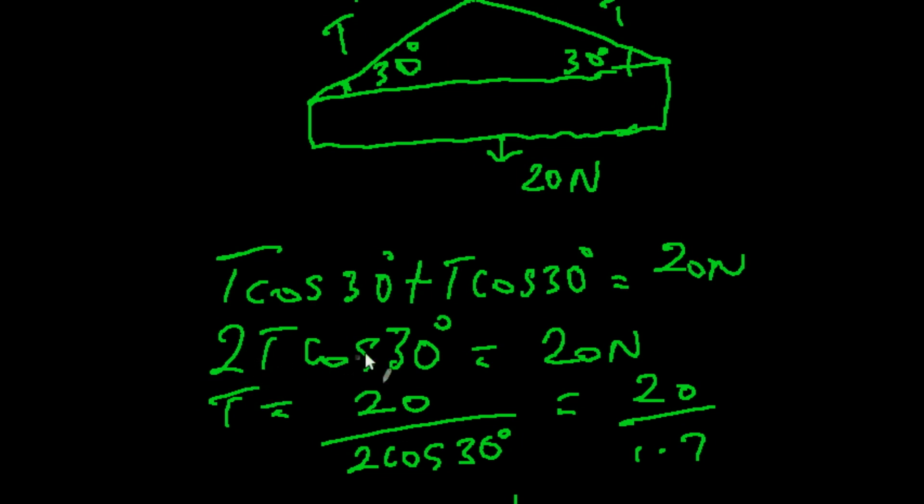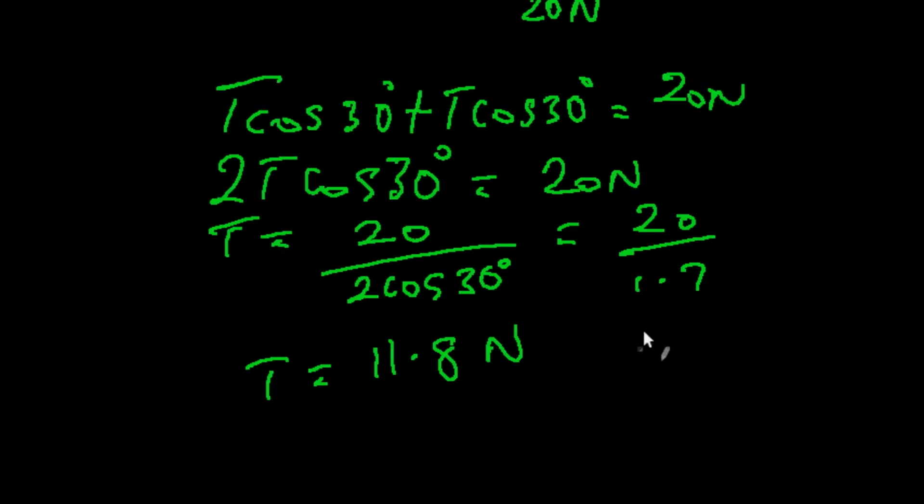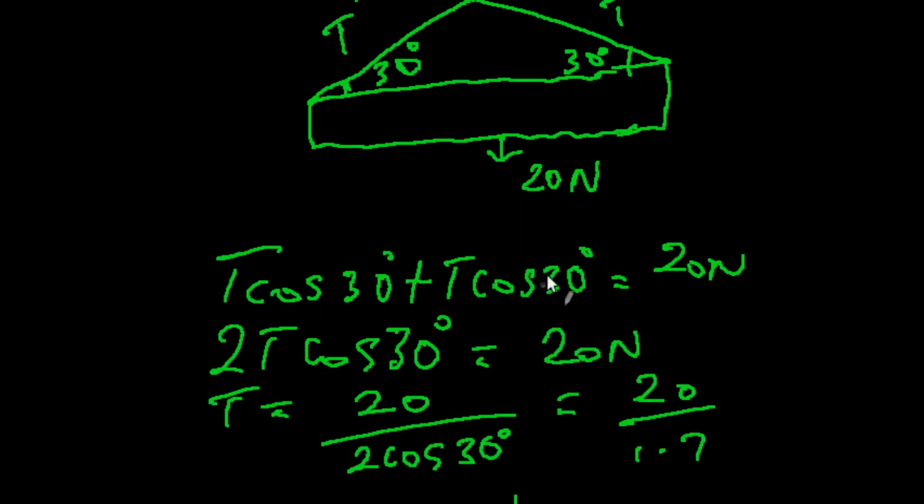So the value of our T becomes 20 all over 2 sine 30 degrees. That's simply 20 all over 1.7, and our T becomes 11.8 newton. I guess this was helpful.